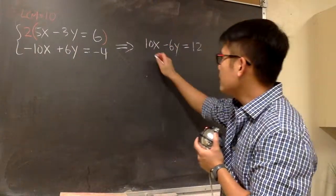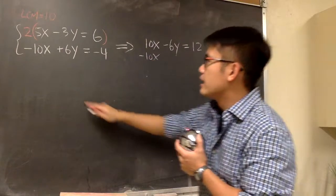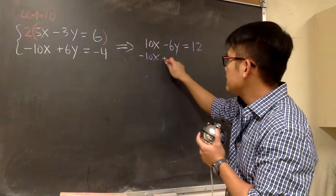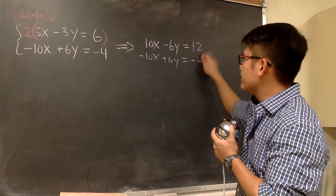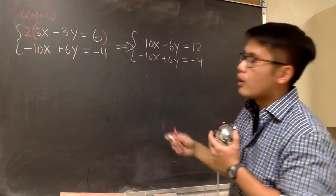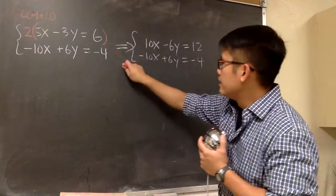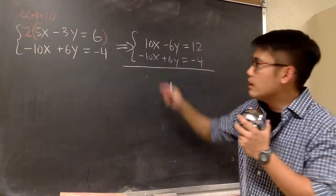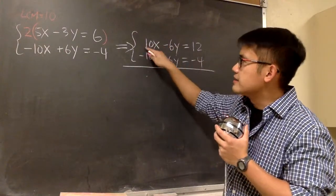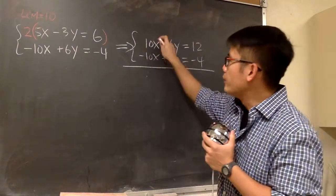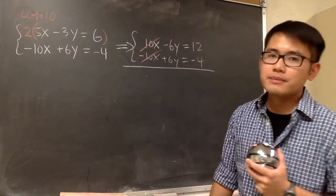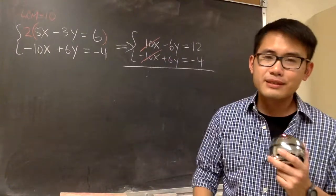So let me just write this down. Negative 10x. And then let me put down plus 6y. And this is equal to negative 4. And now we are ready. As we can see, both of these are 10 and the signs are opposite. And the goal was to get rid of the x first. And we are getting rid of the x. 10x minus 10x is 0.